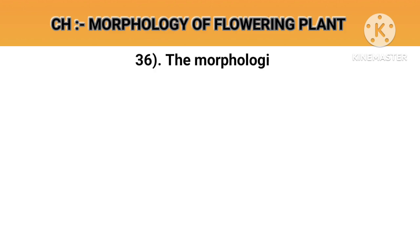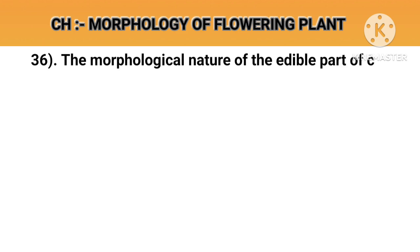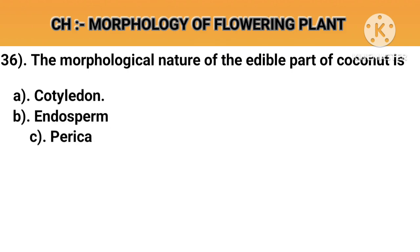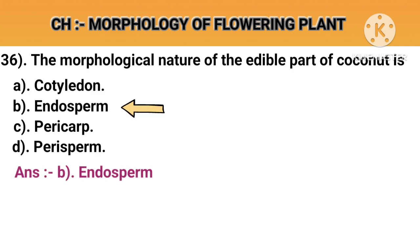Question number 36. The morphological nature of the edible part of coconut is. Option A: Cotyledon. Option B: Endosperm. Option C: Pericarp. Option D: Perisperm. Answer B: Endosperm.